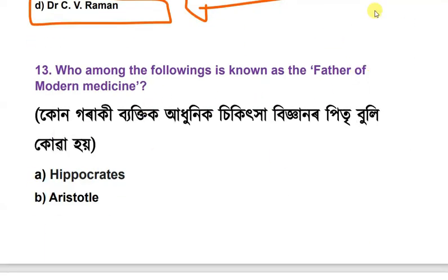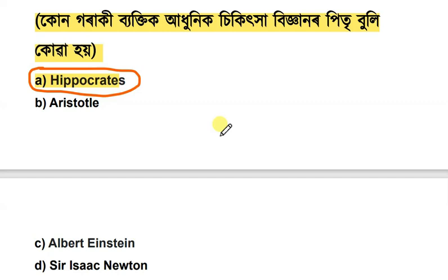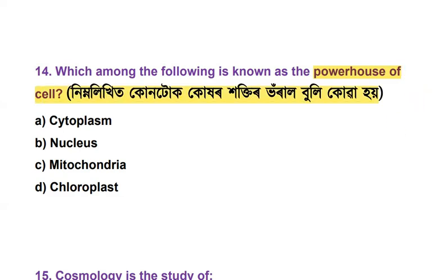Question 13: Who among the following is known as the father of modern medicine? The next question: Who among the following is known as the powerhouse of the cell? The options are cytoplasm, nucleus, mitochondria, and chloroplasts — the answer is mitochondria.